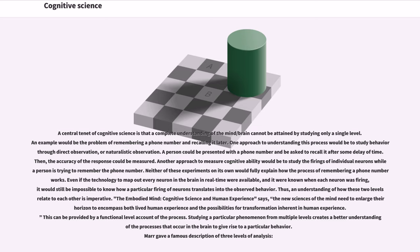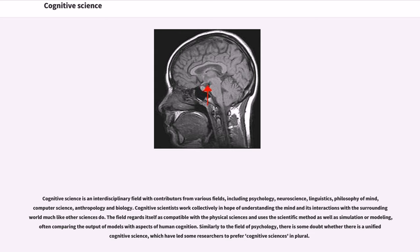Neither of these experiments on its own would fully explain how the process of remembering a phone number works. Even if the technology to map out every neuron in the brain in real time were available, and it were known when each neuron was firing, it would still be impossible to know how a particular firing of neurons translates into the observed behavior. Thus, an understanding of how these two levels relate to each other is imperative. The embodied mind, cognitive science and human experience says, the new sciences of the mind need to enlarge their horizon to encompass both lived human experience and the possibilities for transformation inherent in human experience. This can be provided by a functional level account of the process. Studying a particular phenomenon from multiple levels creates a better understanding of the processes that occur in the brain to give rise to a particular behavior.